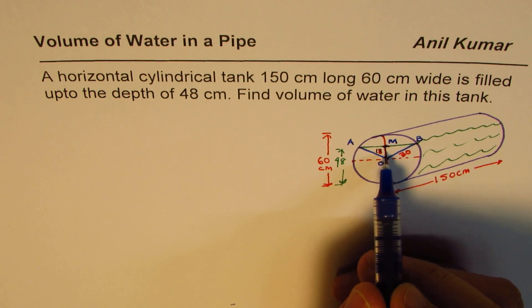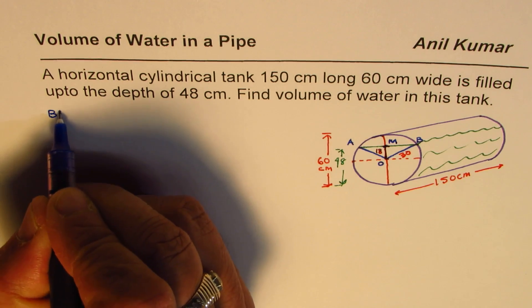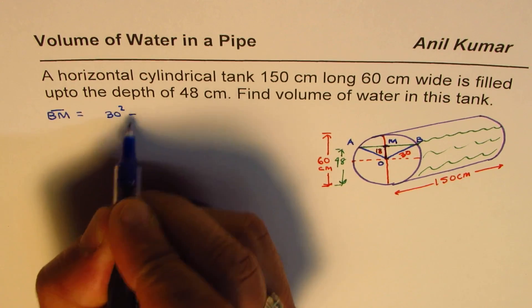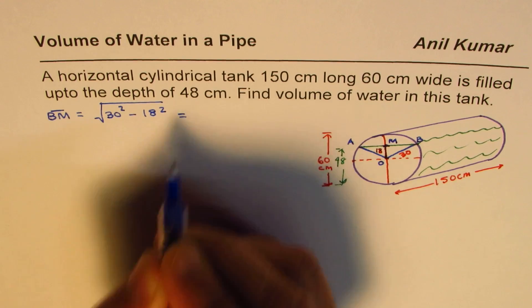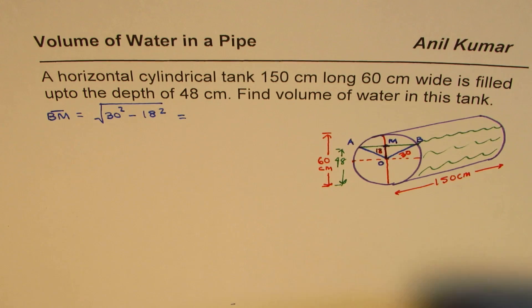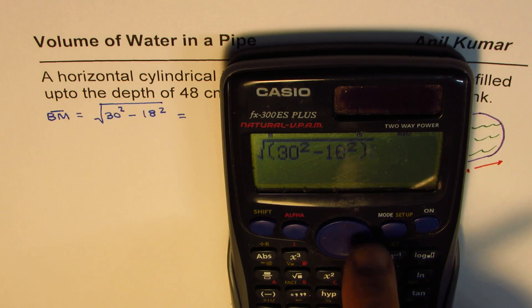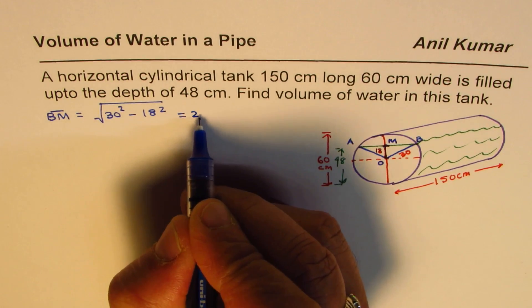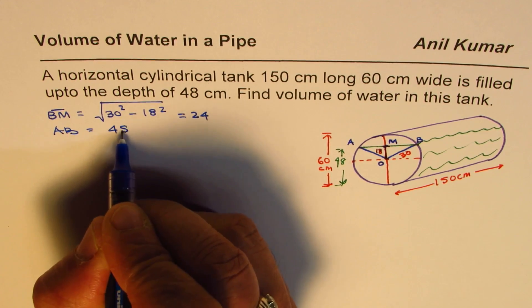Let me call the center point M. In this right triangle, we have two sides: 30 and 18. We can find BM. So BM equals the square root of 30² minus 18², which is the square root of 900 minus 324, equals 24. So this half-length is 24, and AB, the base of the triangle, is 48.